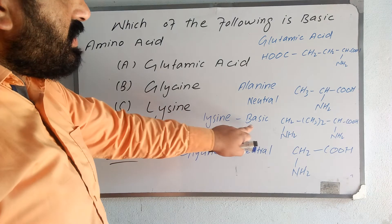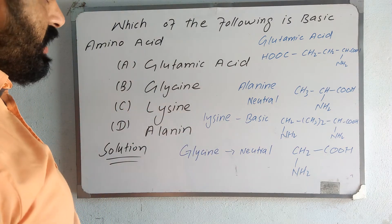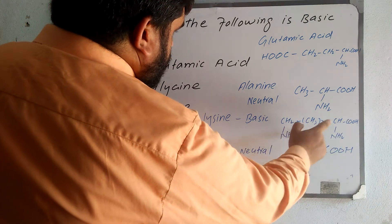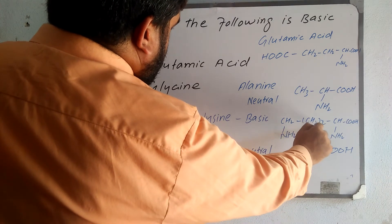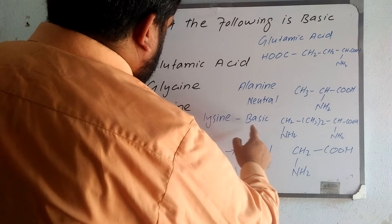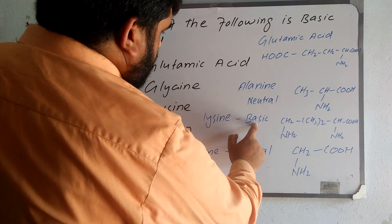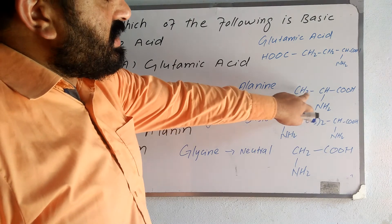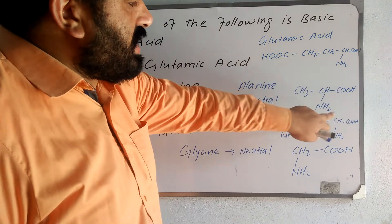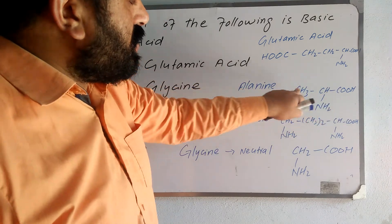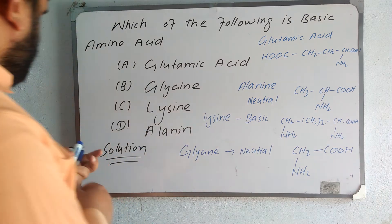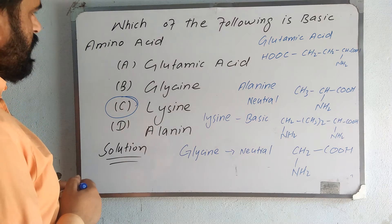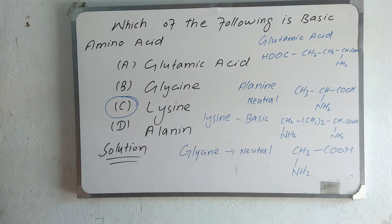Lysine is a basic amino acid. Why is it basic? Because it has two NH₂ groups. Alanine is neutral because its structure is CH₃-CH(NH₂)-COOH, which is a neutral amino acid. So the best and correct option is lysine. Lysine is the correct option in this MCQ.